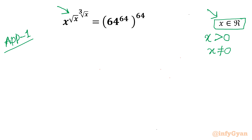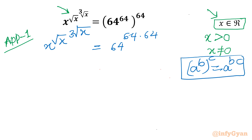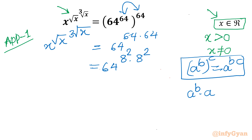Now I will consider the right-hand side: x power root x power cube root x. I will write it as 64 power (64 times 64), using the property of exponents: a power b whole power c equals a power b times c. Writing 64 as the base, the first 64 in the power is 8 squared, and the second 64 is also 8 squared, giving us 64 power 8.